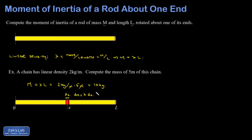This begs the question: how are we going to find lambda? All I know is that it's a constant density in this rod. The rod has a mass of M and a length of L, and that allows us to find an expression for lambda. It's mass per unit length — total mass divided by total length, so lambda equals M over L.